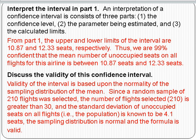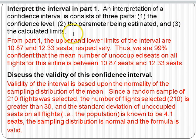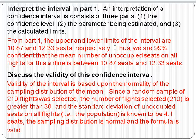Two last things I'll ask you to do on homework assignments: interpret the interval and discuss validity. Interpretation has three parts — the confidence level, the parameter being estimated, and the calculated limits. The upper and lower limits are 10.87 and 12.33. So the interpretation is: we are 99% confident that the mean number of unoccupied seats on all flights is between 10.87 and 12.33.